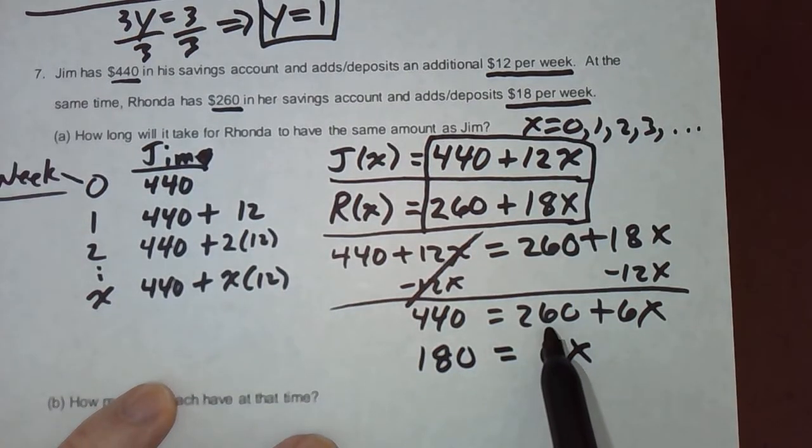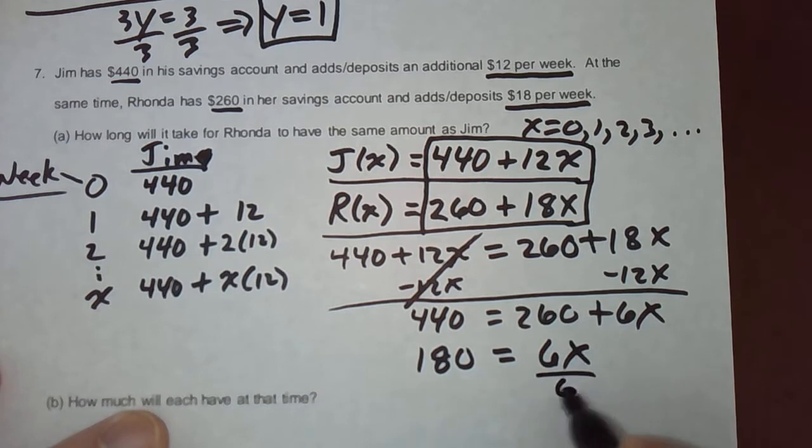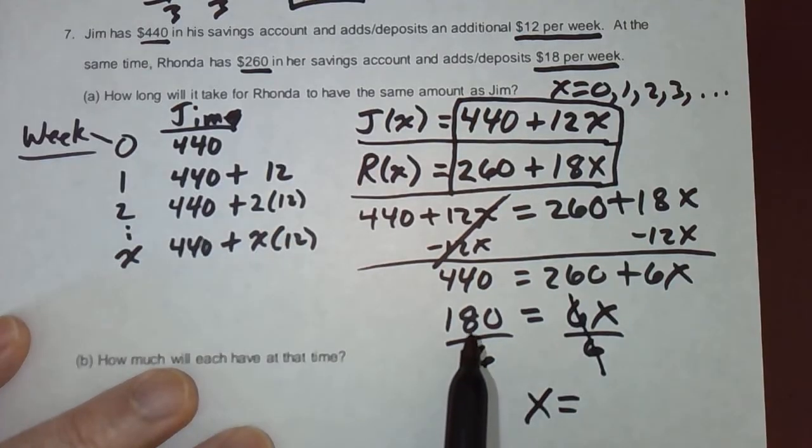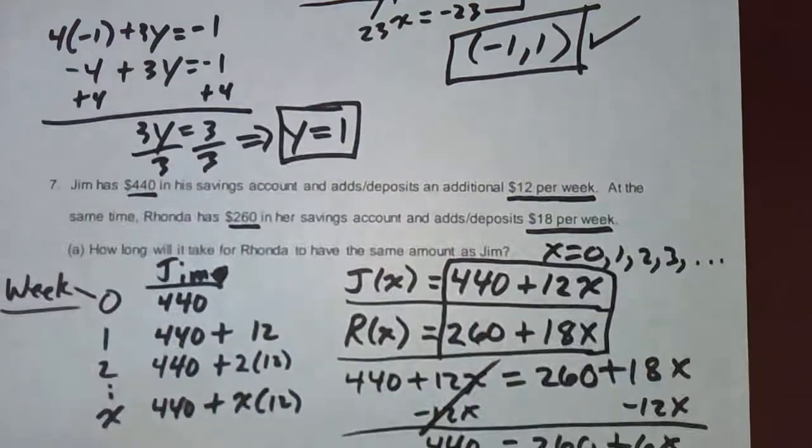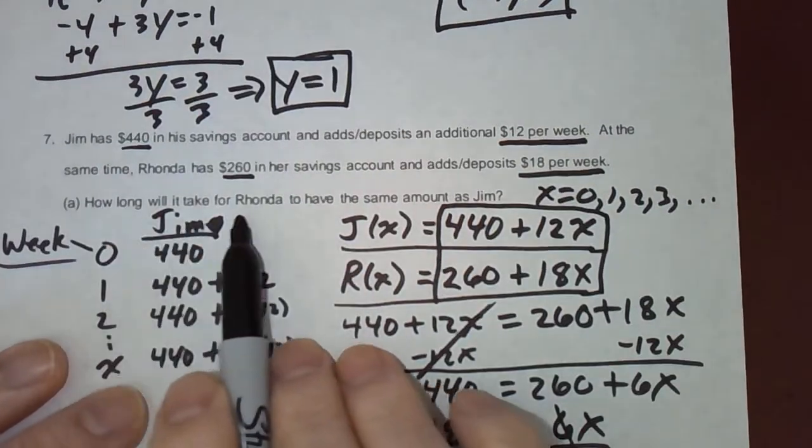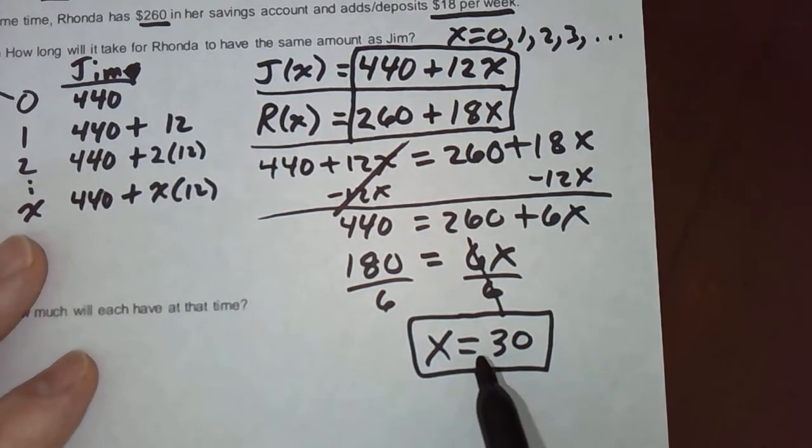And I think we know how to divide. Let's see. Divide that by 6. Divide that by 6. That cancels. We get X equals 180 over 6. 180. Let's see. 6 is 3 times 18. 18 is 6 times 3. So that would be 30. So, how long will it take for Rhonda to have the same amount as Jim? 30 weeks.